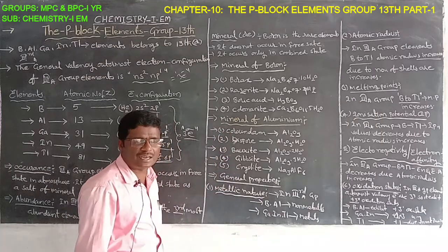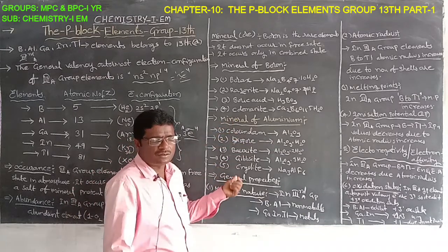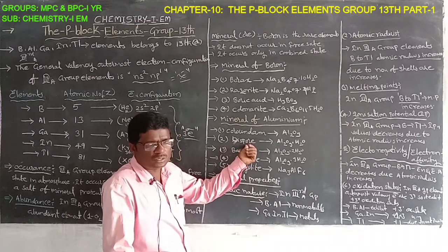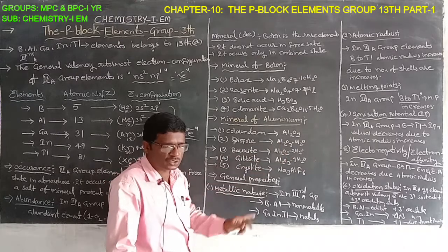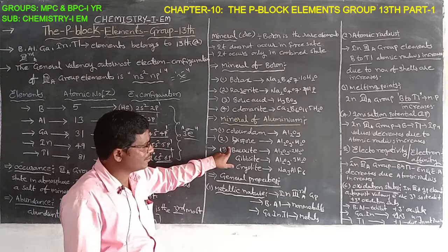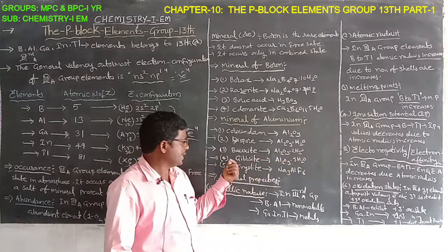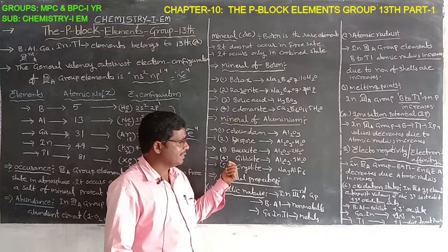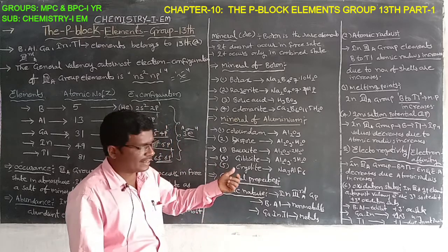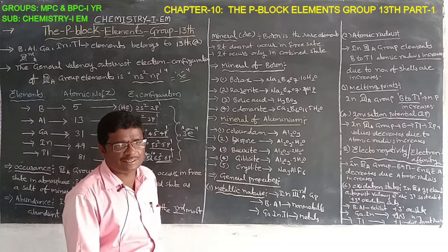Mineral of aluminium: First is corundum — formula Al₂O₃. Second is diaspore — formula Al₂O₃·H₂O. Third is bauxite — formula Al₂O₃·2H₂O. Fourth is gibbsite — formula Al₂O₃·3H₂O. Fifth is cryolite — formula Na₃AlF₆.